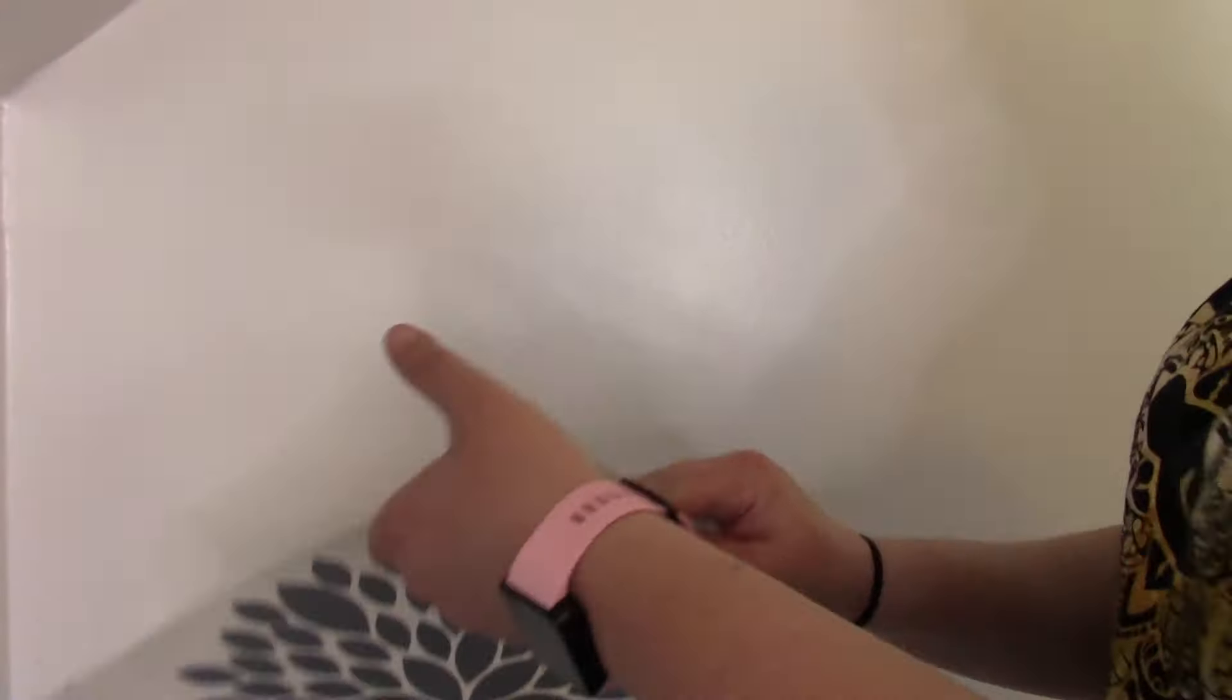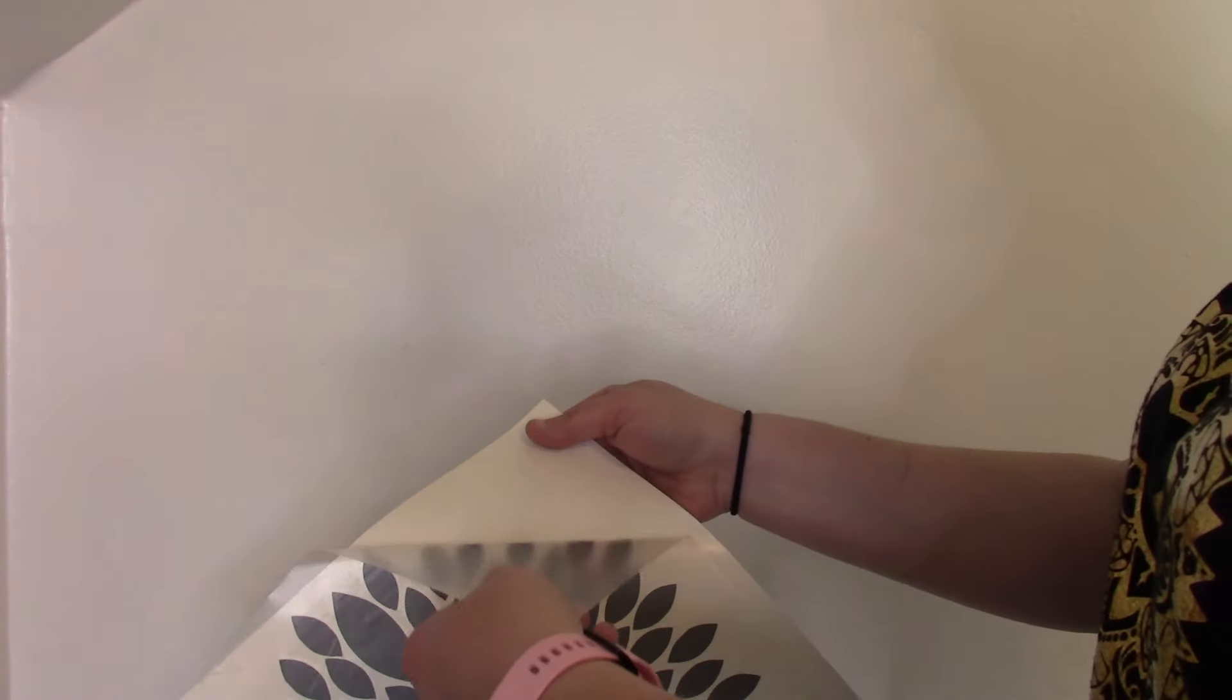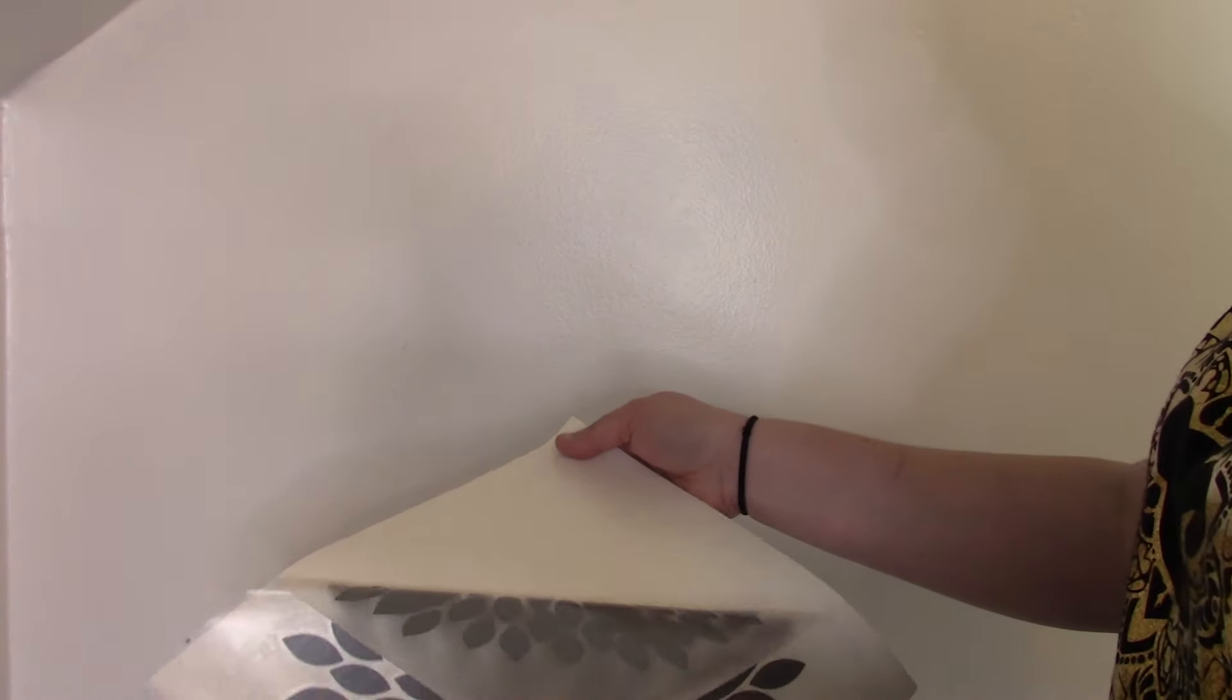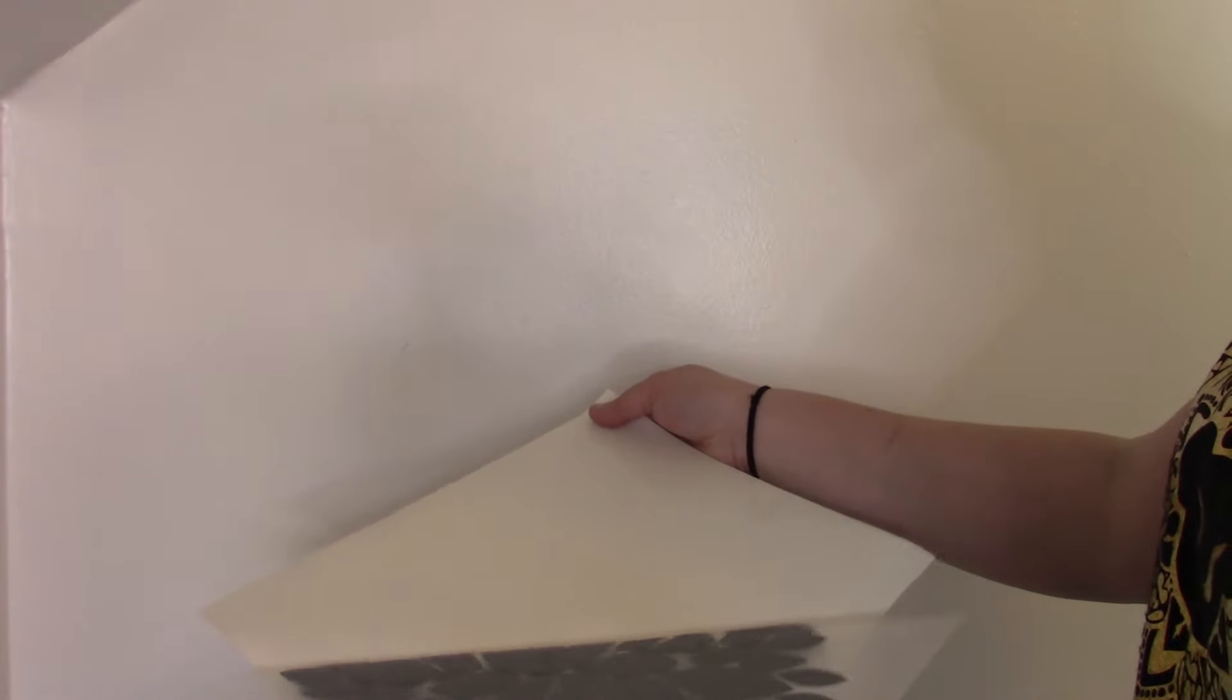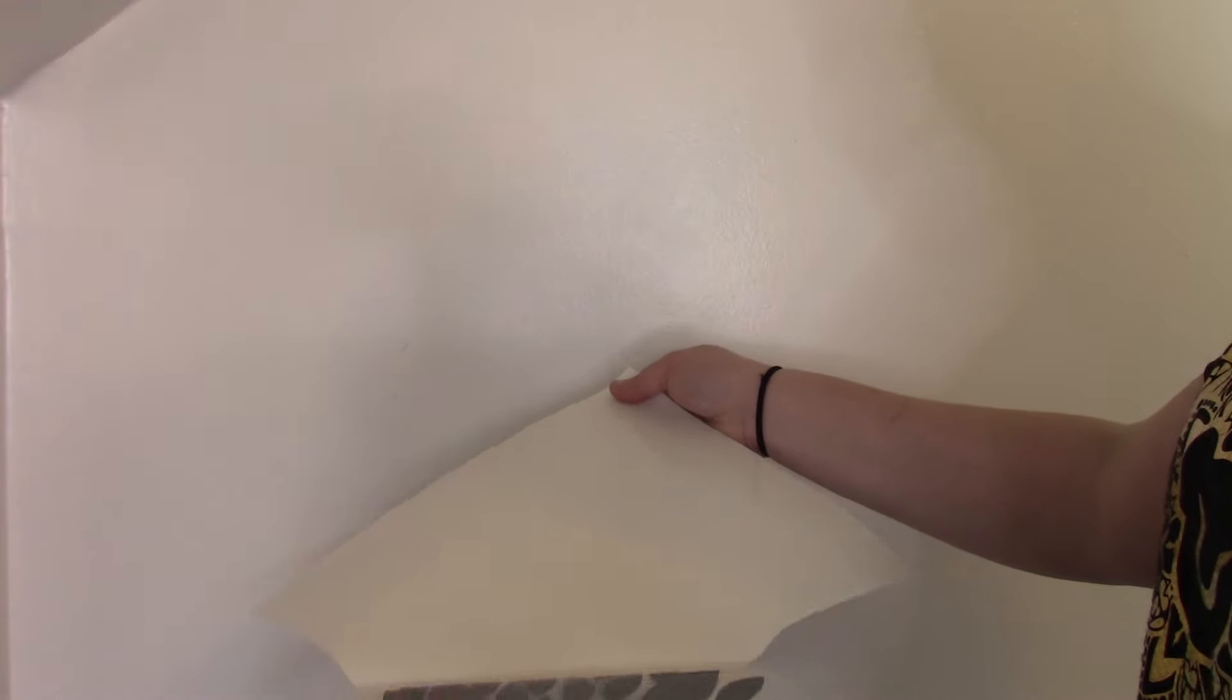You can see I'm disappearing off the screen. I'm peeling off my transfer tape from my gray and making sure it's all stuck down. I didn't burnish it. I forgot to after I applied my transfer tape. But now that I've burnished it, we are going to be able to apply this to the wall. I'll speed up the rest of these because it's pretty much the same thing over and over again.